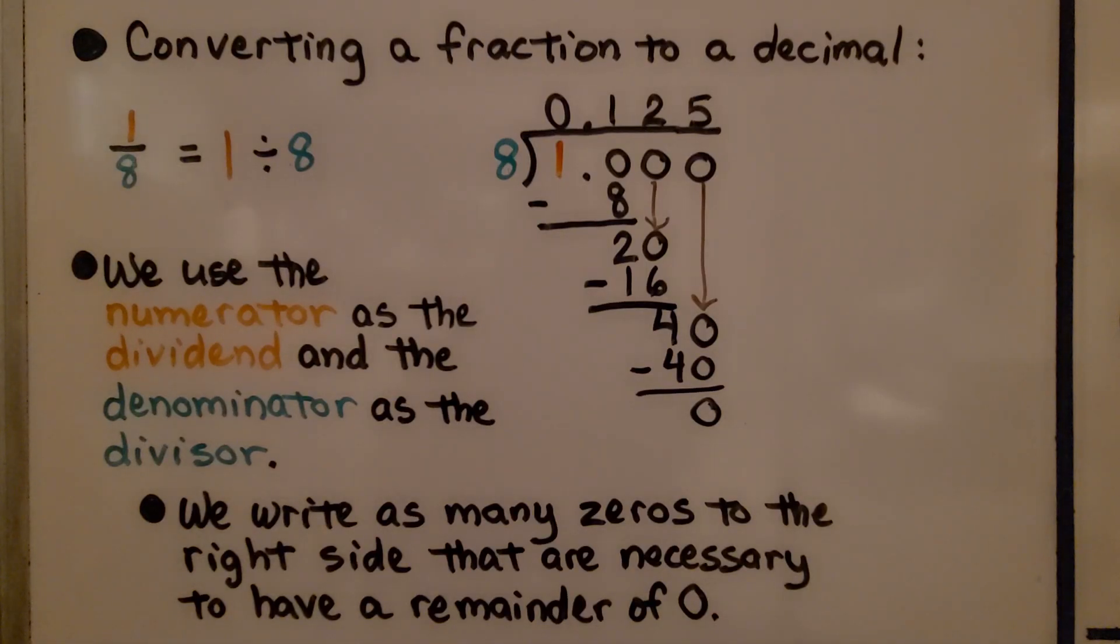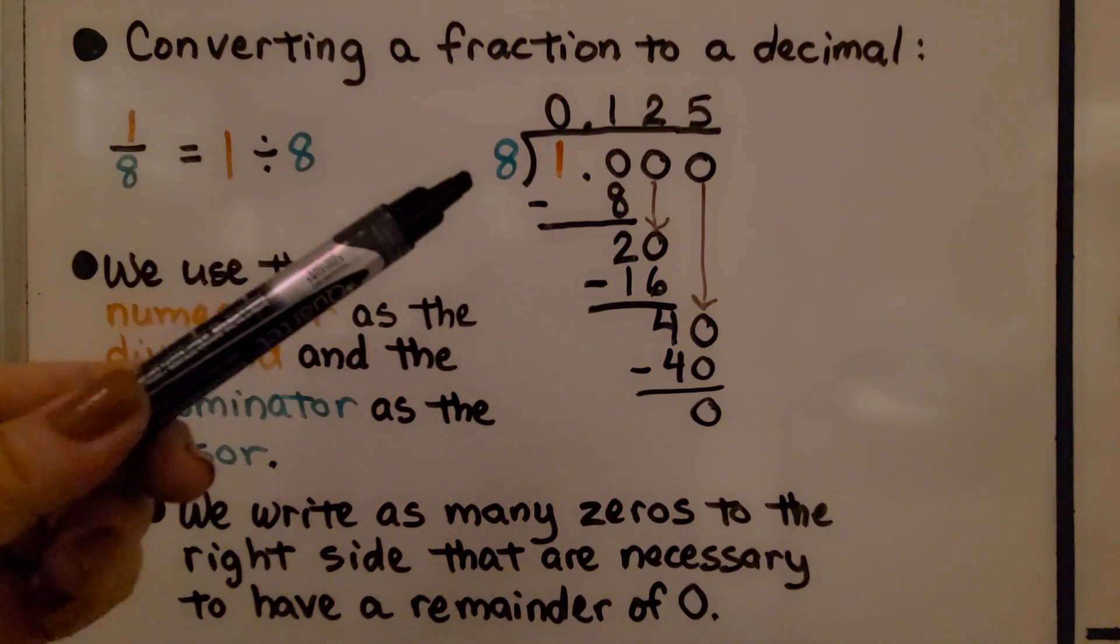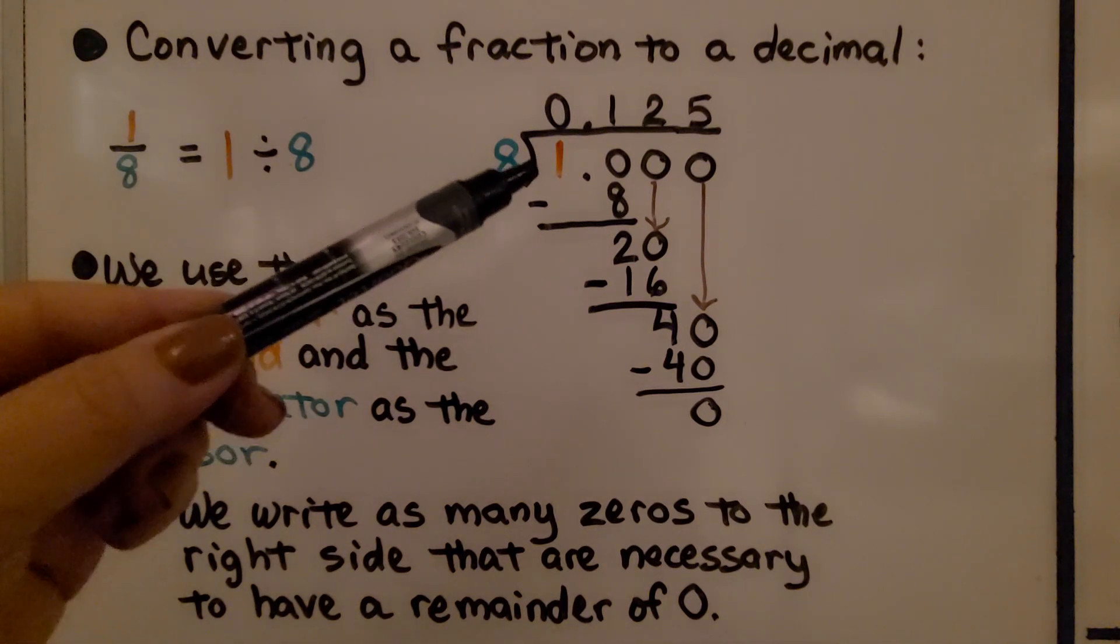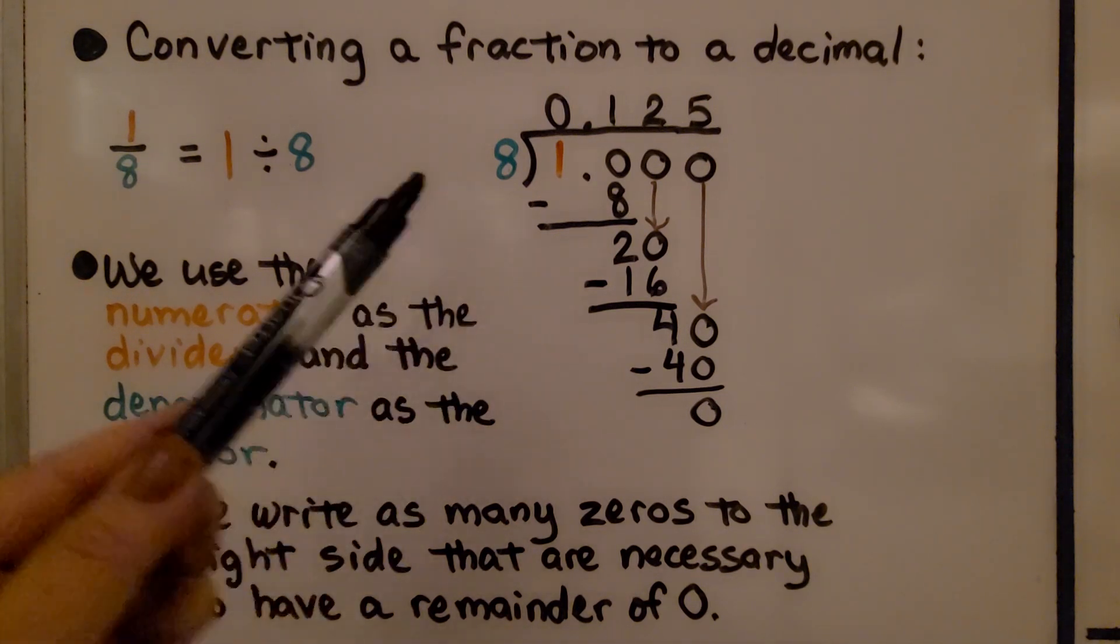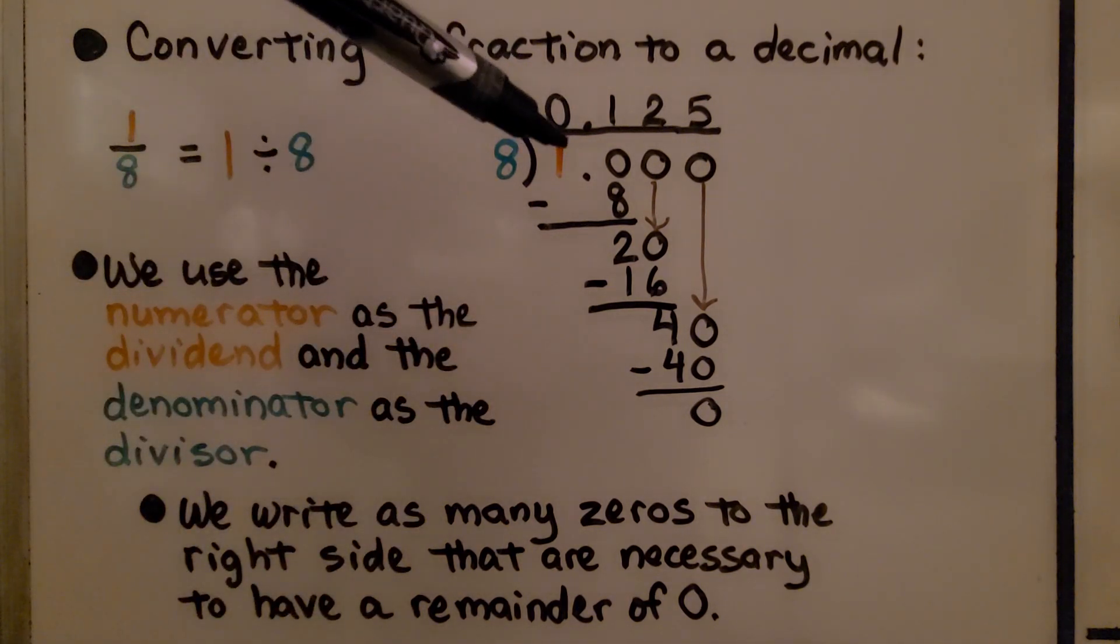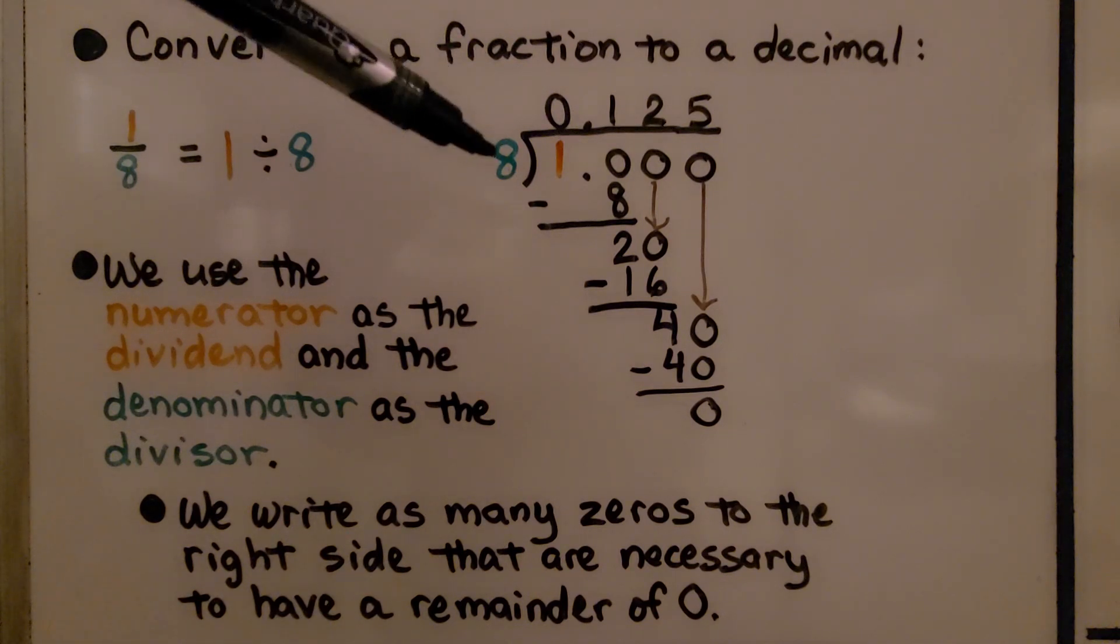We're going to do a quick review of converting a fraction to a decimal. We know a fraction is like a division problem. It's 1 divided by 8, so 8 is the divisor on the outside, the 1 is going to be on the inside. We use the numerator as the dividend, the denominator as the divisor.